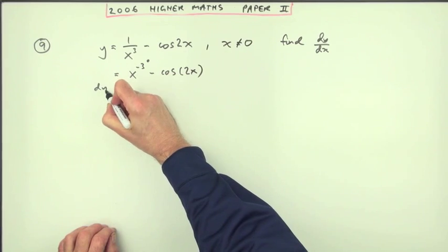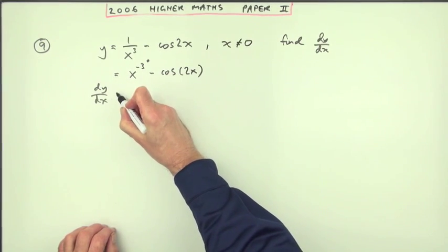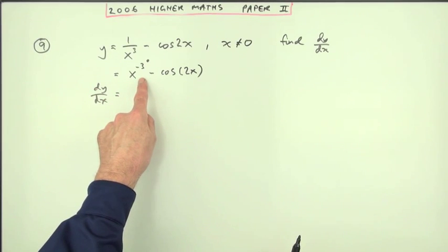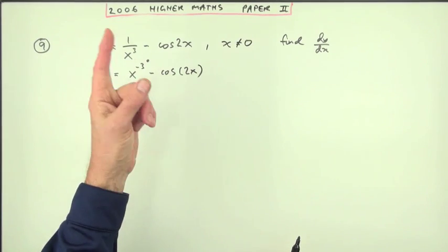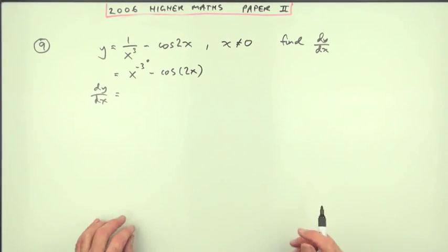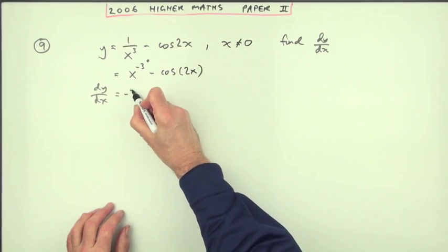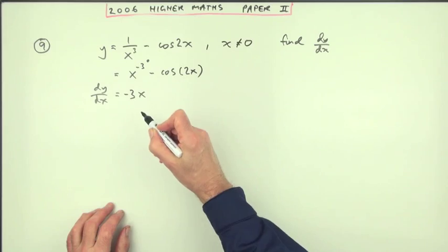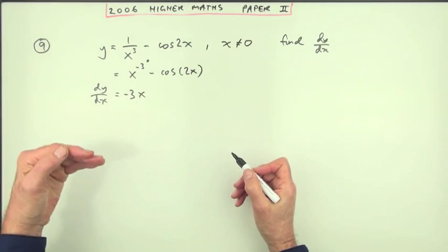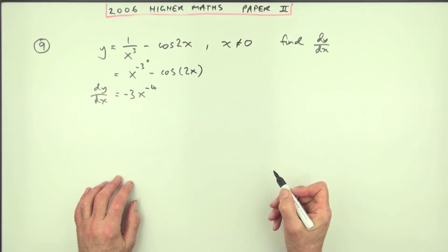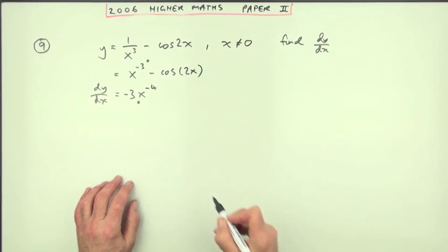Then start to differentiate. Now if you were to integrate by mistake but wrote that first of all, at least you'd get one mark out of the four, but that's all you'd get. So differentiating this term, multiply by the power, take one off the power, so it's going to drop even lower, become more negative, so that becomes power negative 4. Now that gets you a mark.